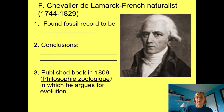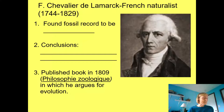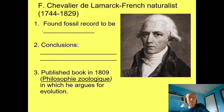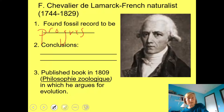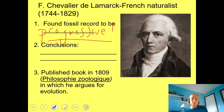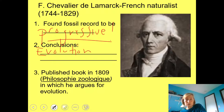One important researcher was Chevalier de Lamarck, a French naturalist who lived before Darwin. He examined the fossil record and found it to be progressive — that species seem to gradually change with time. He concluded that evolution happens, and that evolution occurs as organisms adapt to their changing environment.